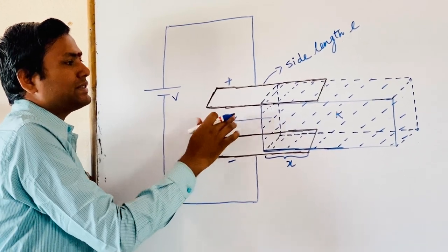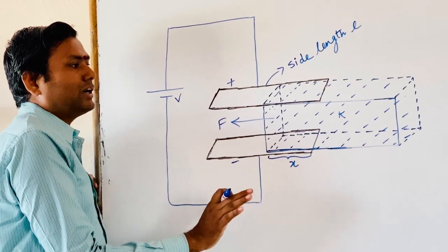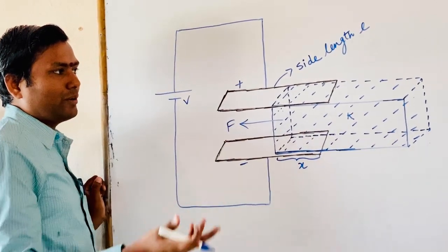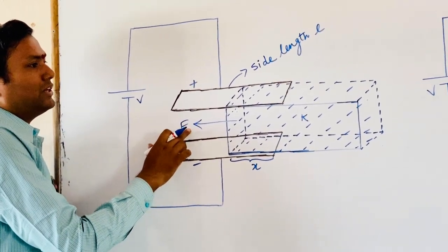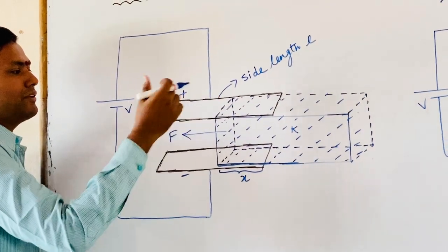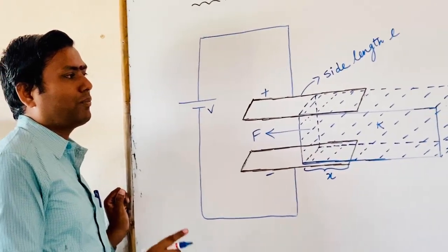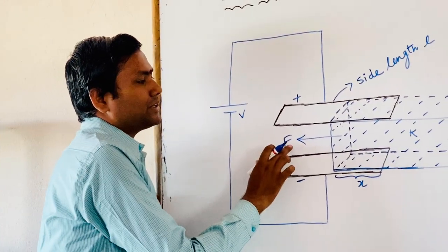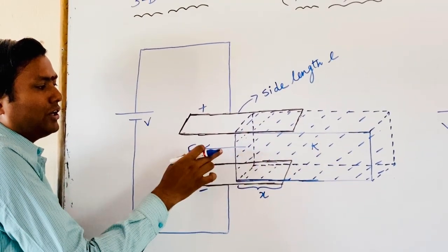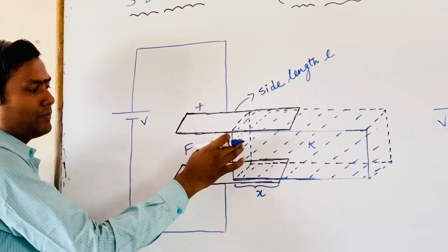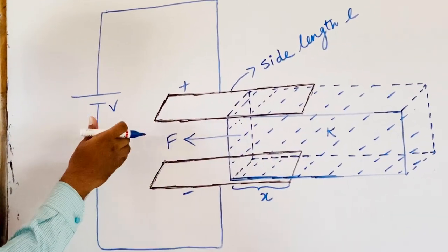Does this force exist continuously or only for some time? What type of motion is this force responsible for? After the derivation, we can find out the nature of this force. But here I want to make one point clear: this force is responsible for the oscillating motion of this slab. This force is making this dielectric slab move in the leftward direction.